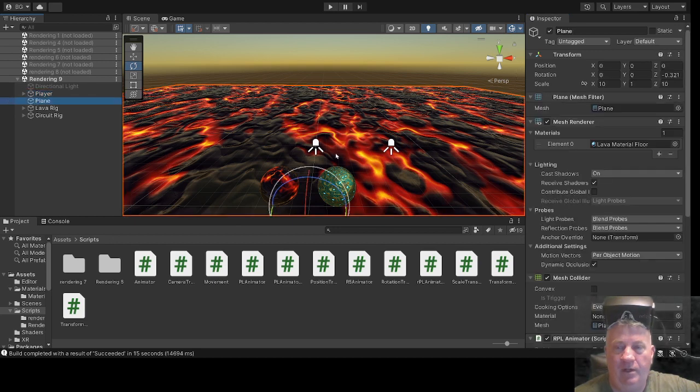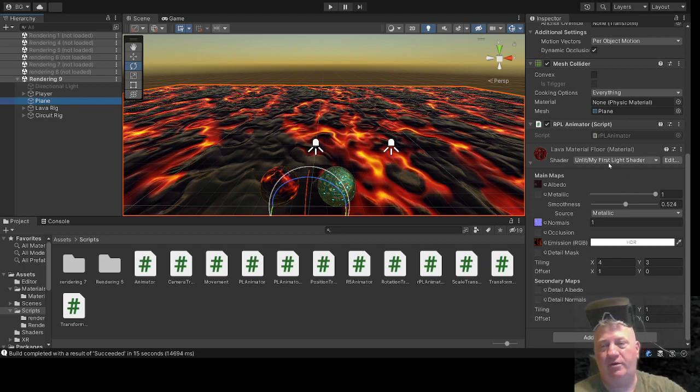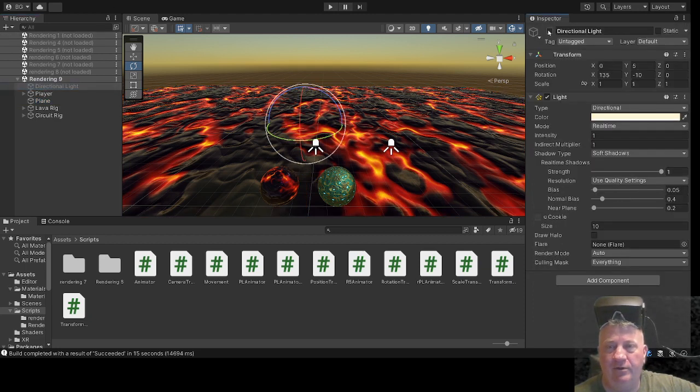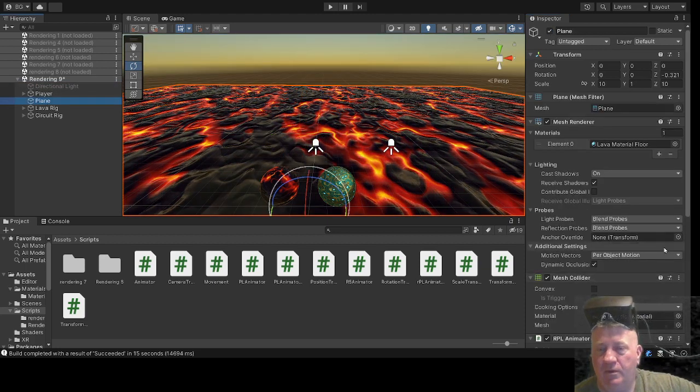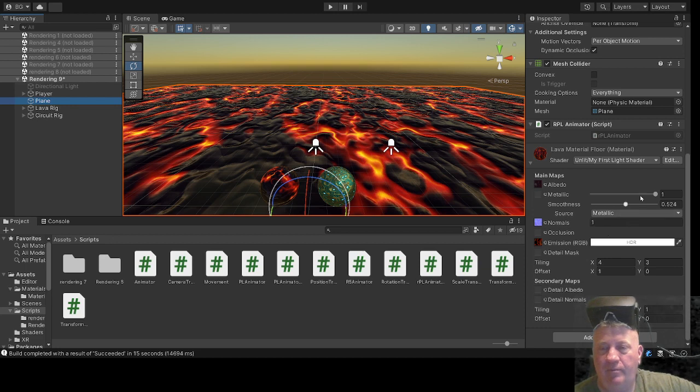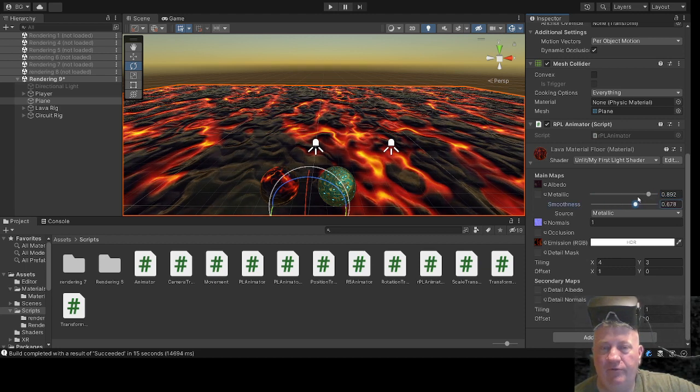This is actually the custom material that it's using—my first light shader. I could do everything with this, like just change the directional light. You've got the capability to be able to choose metallicness, and this is the plane down below of the material for the lava, and the smoothness of it—whether or not it's a smooth or not smooth surface.